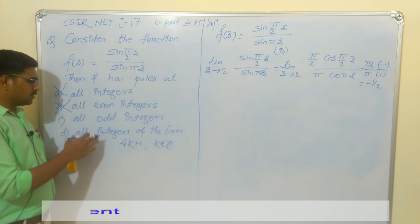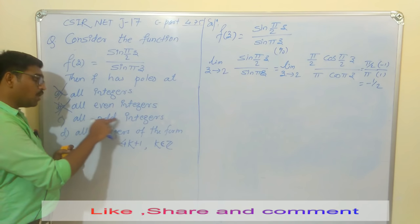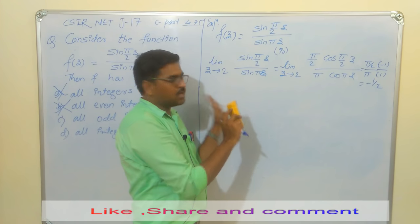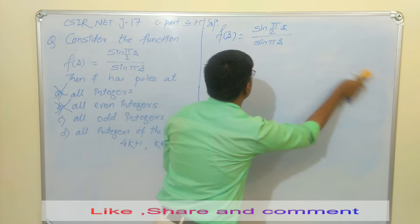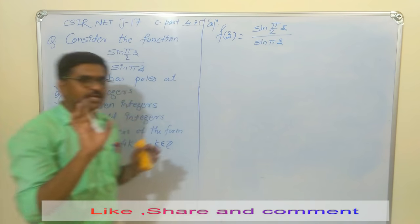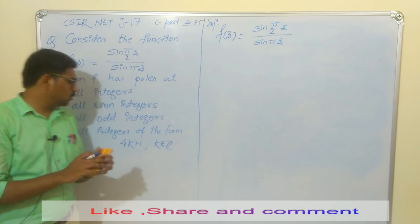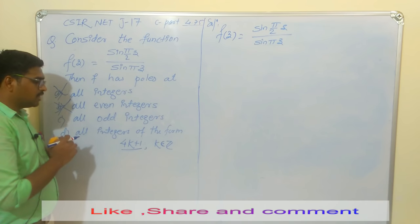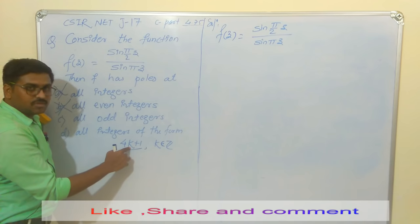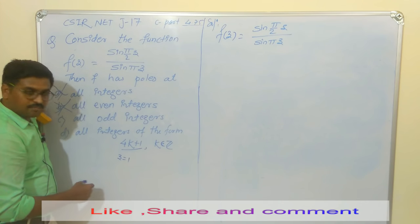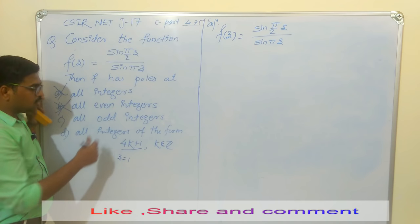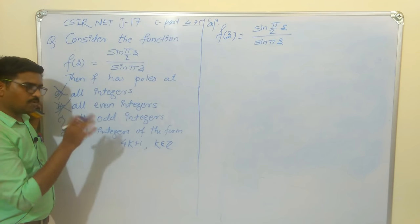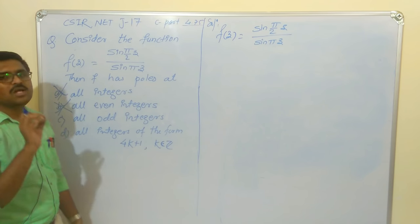Now for odd integers — notice that Options C and D are related: both involve odd integers. The form 4k+1 always gives odd integers. If k=0, z=1; k=1, z=5; k=2, z=9, etc. Since 1 is both an odd integer and of this form, I'll check z=1 first, and then also check z=3, which is odd but not of the form 4k+1.